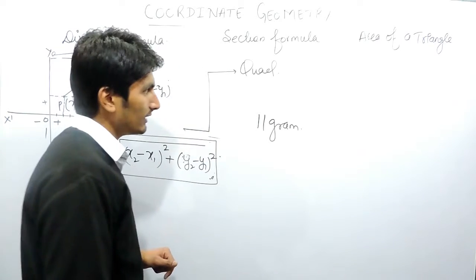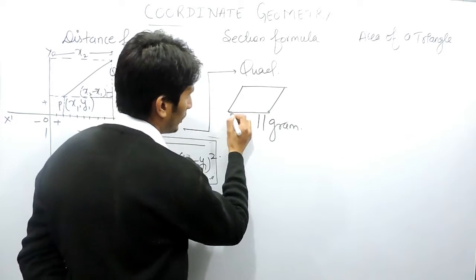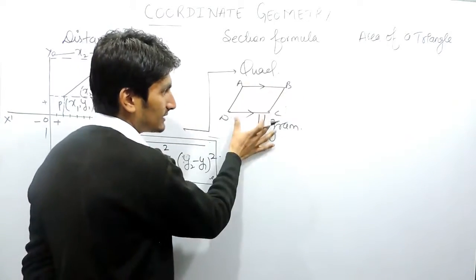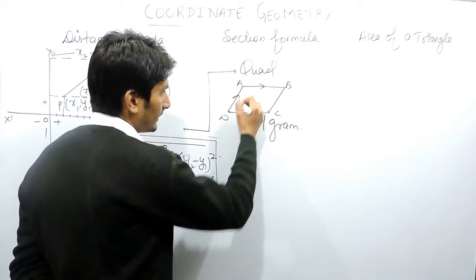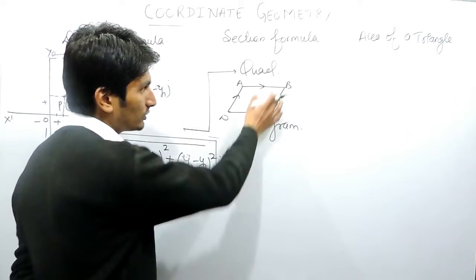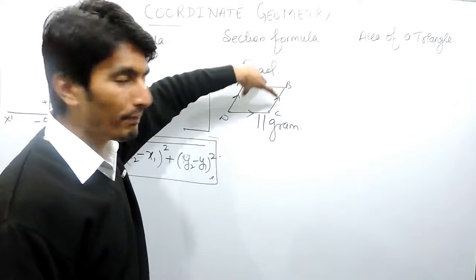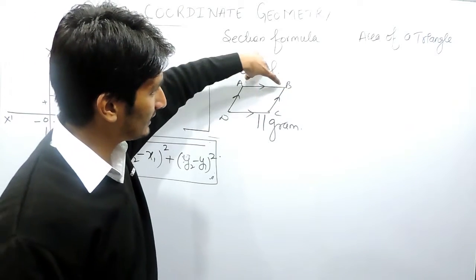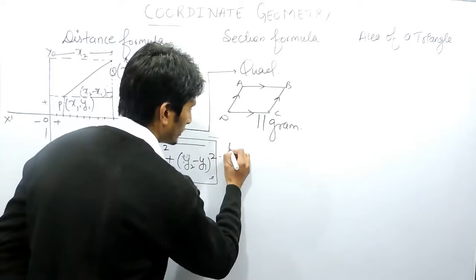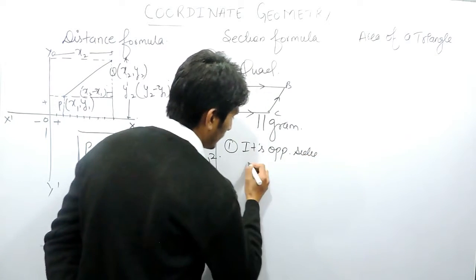A parallelogram is a figure where ABCD has AB parallel to DC and AB equal to DC. Similarly, AD is parallel to BC and AD is equal to BC. These are the basic properties of a parallelogram: two opposite sides must be equal and parallel. If the opposite sides of a quadrilateral are equal, then that quadrilateral is known as a parallelogram.